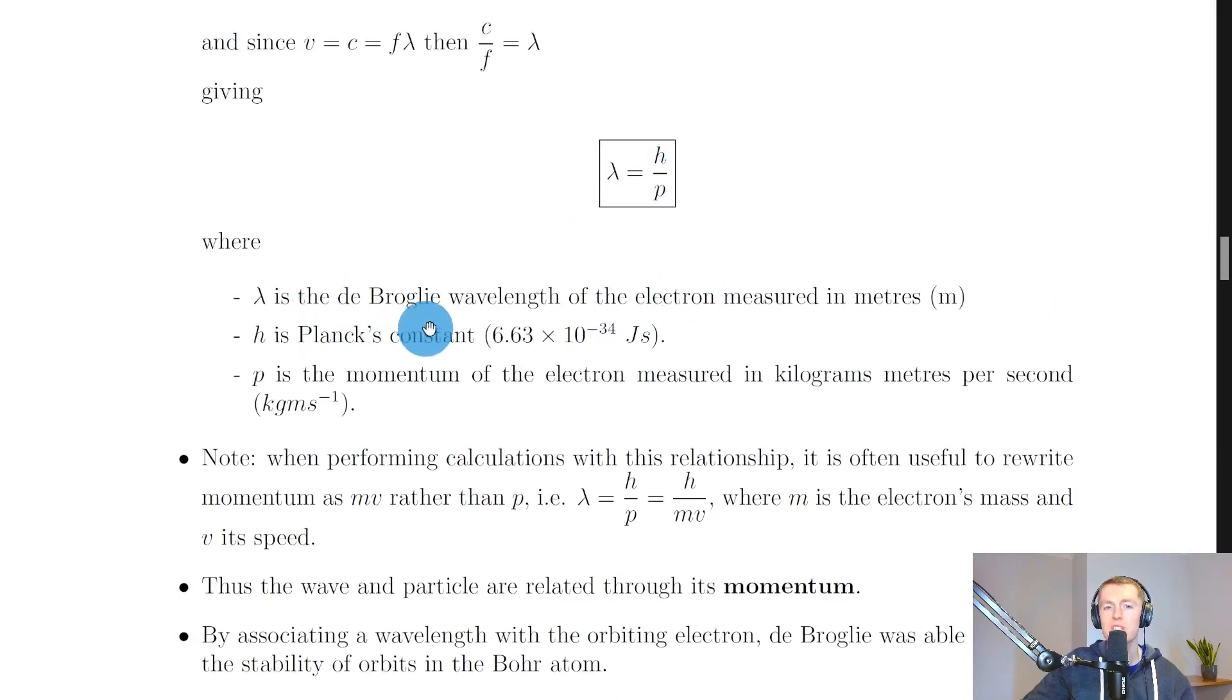Lambda is the de Broglie wavelength of the electron measured in meters, H is Planck's constant which is on the datasheet, and P is the momentum of the electron measured in kilogram meters per second.